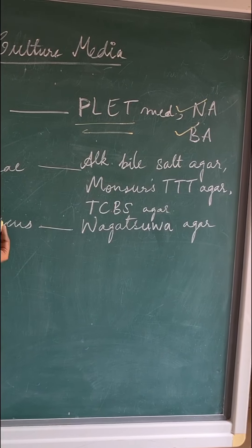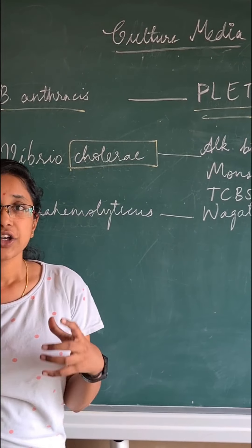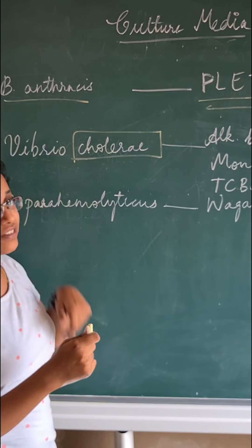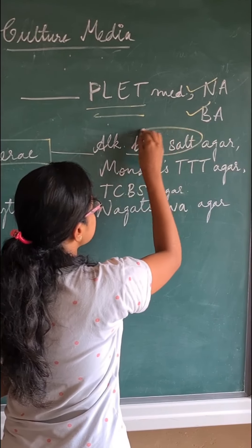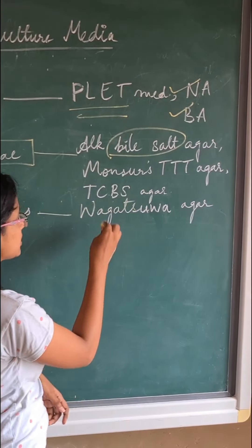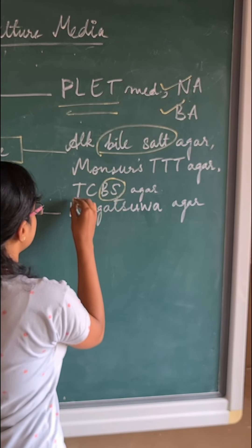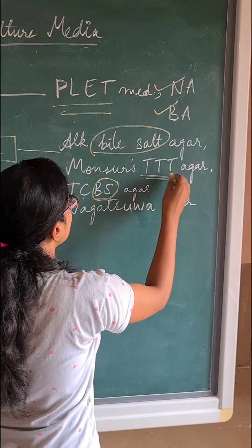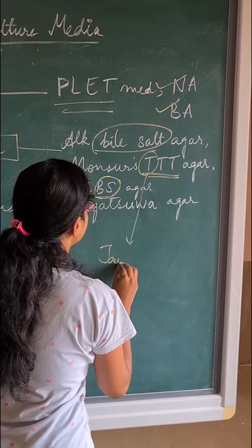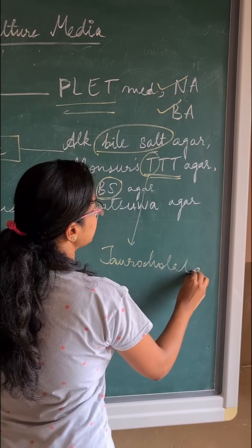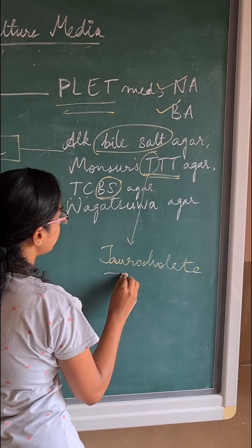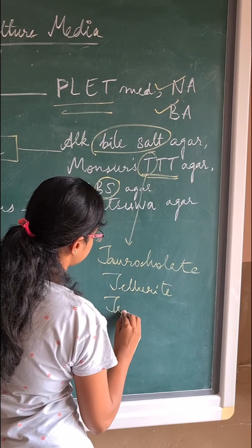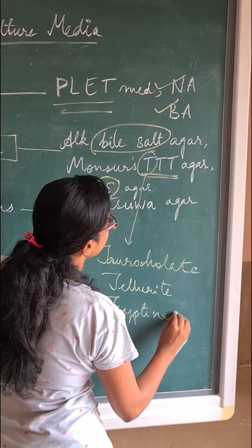For Vibrio cholerae, remember all bile salt-related media come for Vibrio cholerae: alkaline bile salt agar, TCBS — that is thiosulfate citrate bile salt agar — and in Monsur's TTGA agar, the T stands for taurocholate, which is a secondary bile salt, and tellurite.